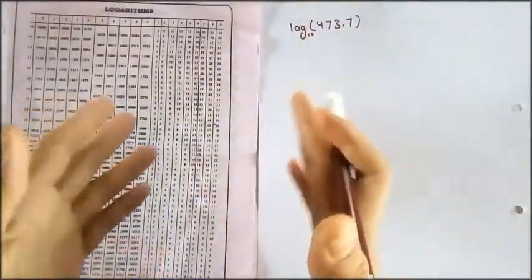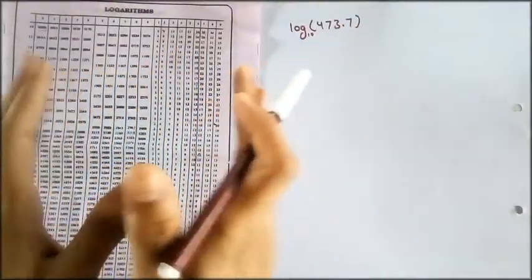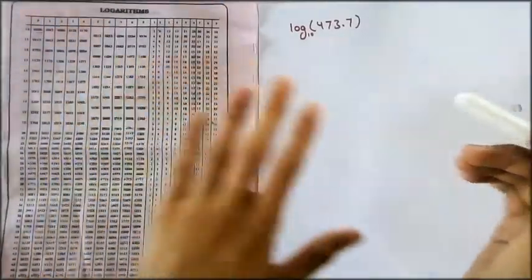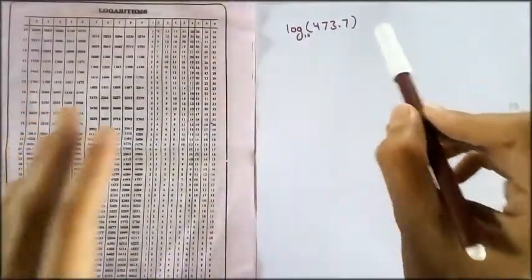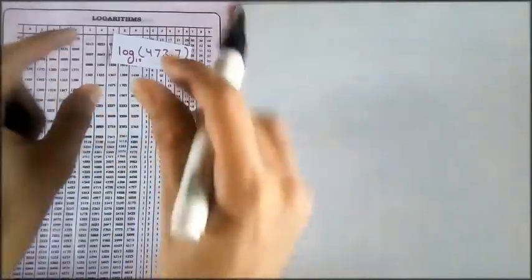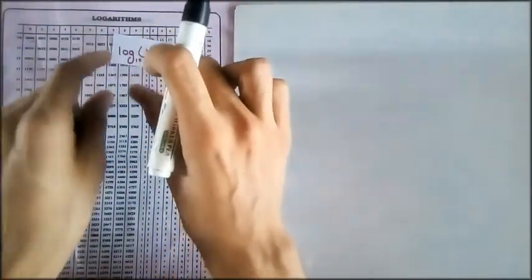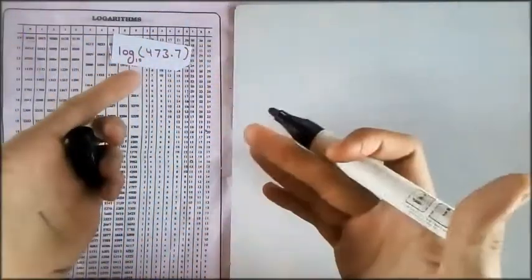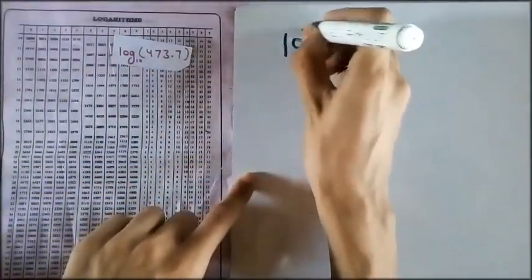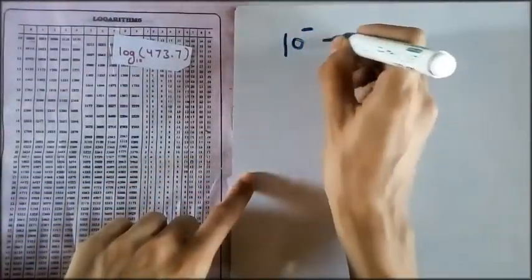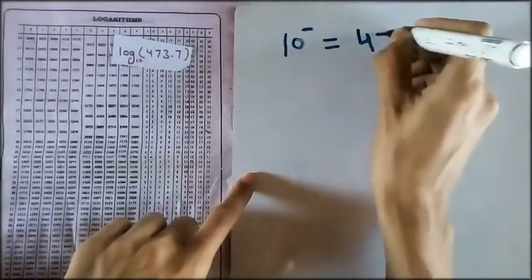For a simple demonstration on how to use the logarithm table, we will find the log of 473.7. So if you want to perform this activity with me, take out your logarithm table, a pen and paper and let's find the logarithm of 473.7. As you can see that we are using a base 10 logarithm table. So let's figure out what is our task. That is, we have to find that power of 10 from which we can get this number.